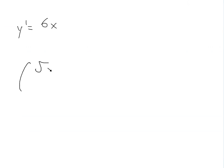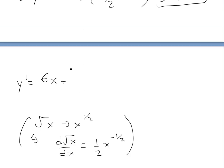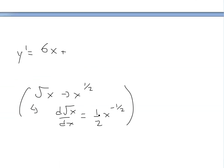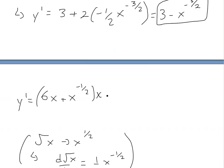Let's work out the derivative of square root of x separately. Writing it as x to the one-half, we bring down the one-half: the derivative is one-half times x to the negative one-half. So back in the full expression, we have plus 2 times one-half times x to the negative one-half — the twos cancel, leaving just x to the negative one-half. Now we multiply this entire derivative of the top by the bottom, which is x.